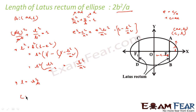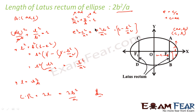The full latus rectum is 2L because the segment above is L and below is also L, so the total length is 2L = 2B² / A. That is our answer. In summary, we took point A with coordinates (AE, L), substituted into the ellipse equation, and solved for L.